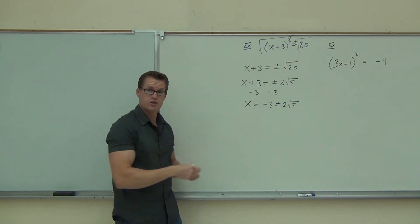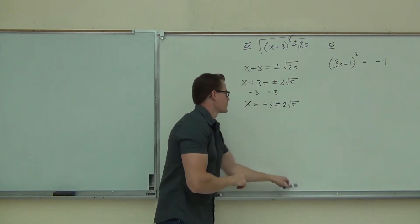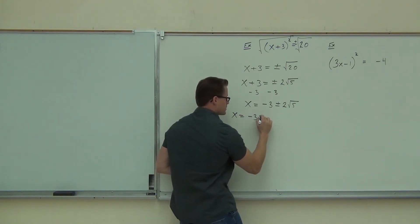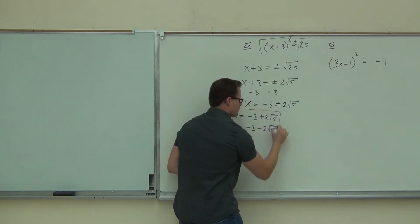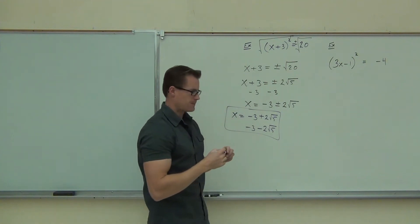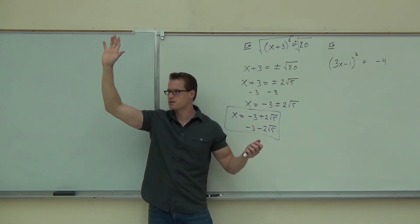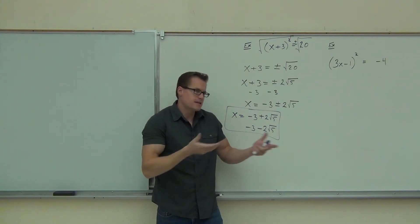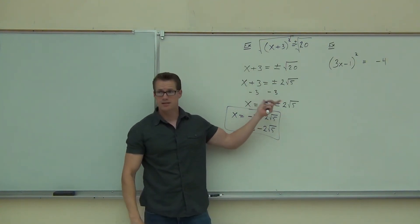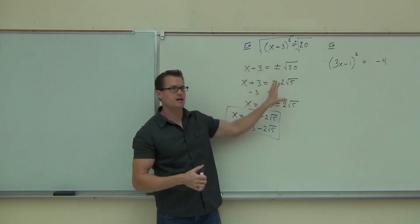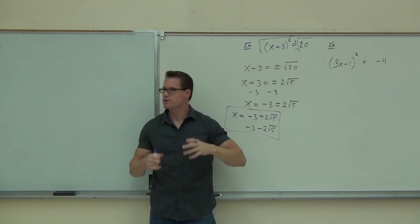Because you're going to be adding and subtracting that to this negative 3. The last thing we've got to do is write out both of our solutions, which we have 2 of. We do negative 3 plus 2 root 5 and negative 3 minus 2 root 5. Would you raise your hand if you made it all the way down to that? That's great. That's fantastic. You're there. You now have the idea down for this section. This is it.